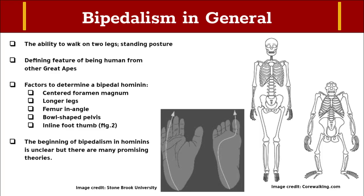An angled femur and longer legs also display bipedality in a hominin. An angled femur allows for the human's feet and knees to be placed under the body's center of gravity, supporting balance and weight during walking. An ape's legs have more vertical femurs, which helps with walking on all fours. Longer legs in humans are specialized for distance running and easier walking. Also, a more bowl-shaped pelvis acts as a support base for walking upright.